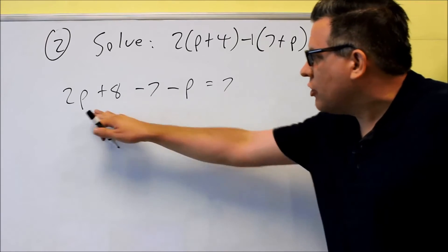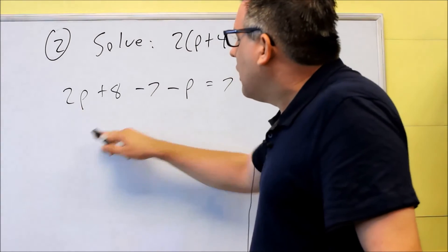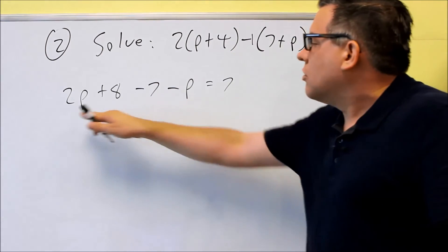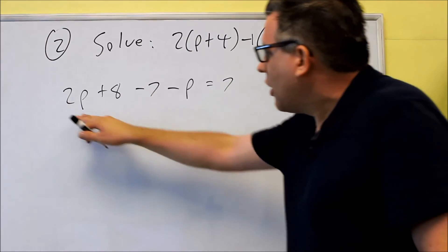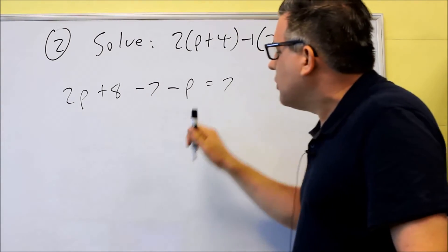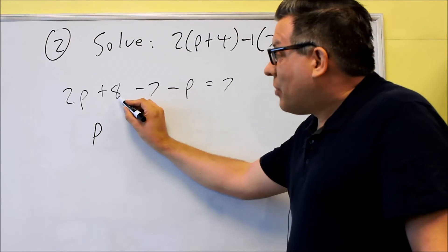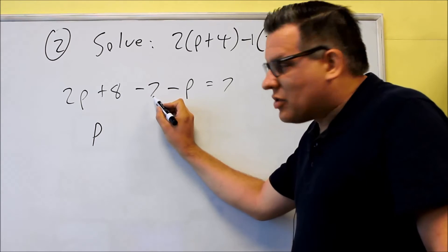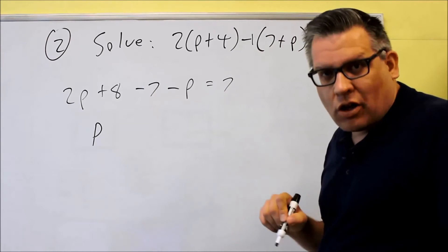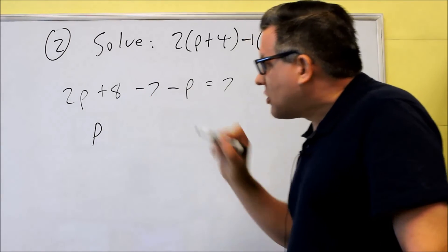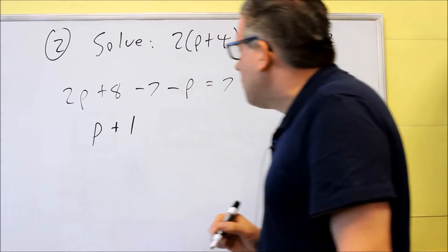Next thing we're going to do is we need to add some like terms together here. So I have a two p and I have a minus p here. So those are the like terms, and these two numbers are like terms. So two p minus p is just single p. I have a positive eight, I'm subtracting seven. If the signs are different, you subtract them and take the sign of the larger number. So eight minus seven is one, and that would be positive. p plus one there. On the other side, I have the seven.